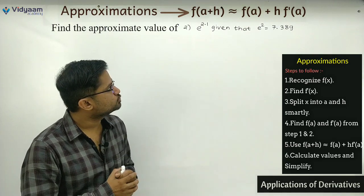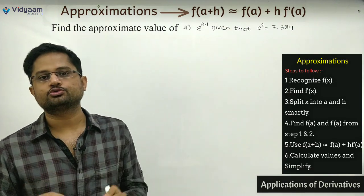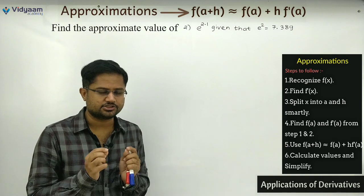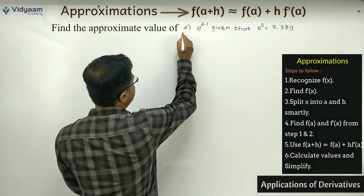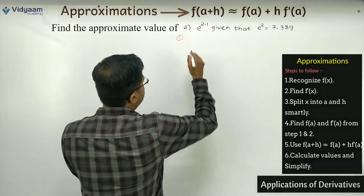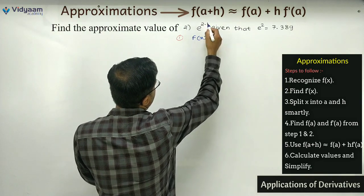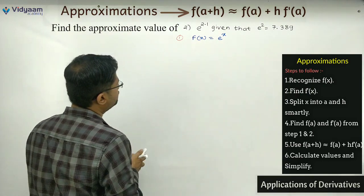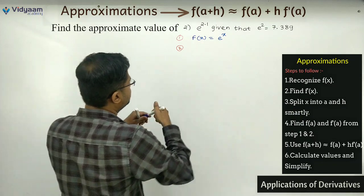Second sum: find e raised to 2.1, given that e² = 7.389. The steps are the same as just discussed. First step: the given number is assumed as x, so f(x) = e raised to x. Step 2: find f'(x). The derivative of e^x is e^x itself — it is the only function whose derivative is itself.